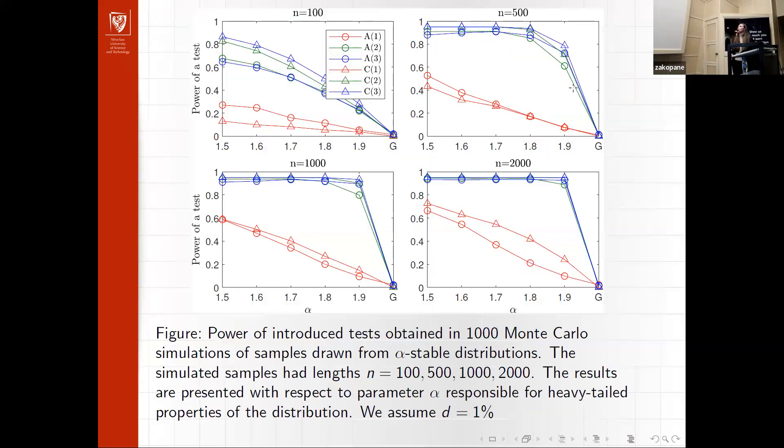These are the results presenting the power of the test for alpha-stable distribution. We can see that the power of the test is decreasing when we are increasing the alpha, so when we are going closer to a Gaussian distribution. The statistics A1 and C1 favor not rejecting the null hypothesis, and the other tests favor rejecting the null hypothesis. Those results were obtained for 1,000 Monte Carlo simulations.